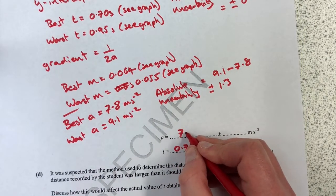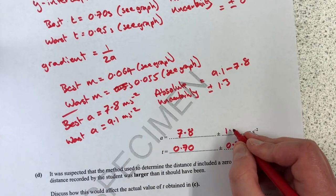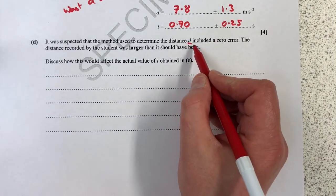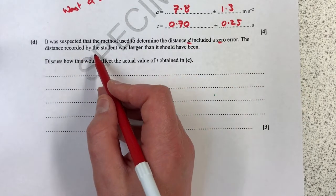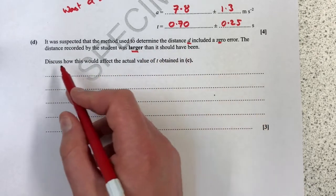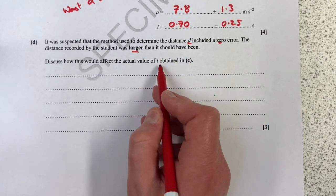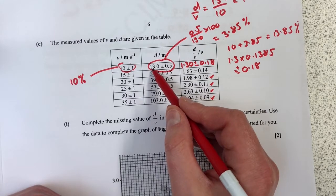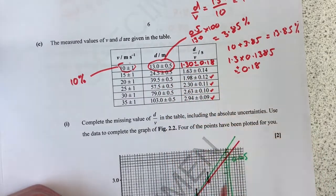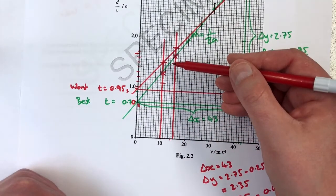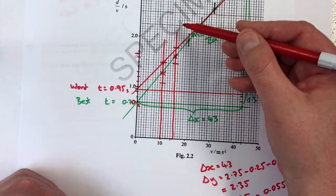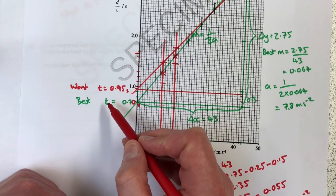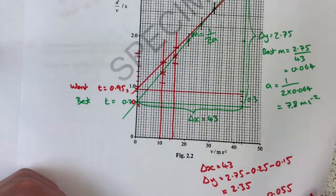It was suspected that the method used to determine distance d included a zero error. The distance recorded by the student was larger than it should have been. Discuss how this would affect the actual value of t obtained in c from your graph. If these values are bigger than they should be, then these values are bigger than they should be, which means all the points that you've plotted on the graph along the y-axis are higher up than they should be, which means your y-intercept is higher up than it should be, which means your value of t, the thinking time, is higher than it should be.